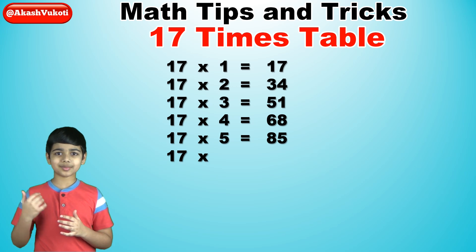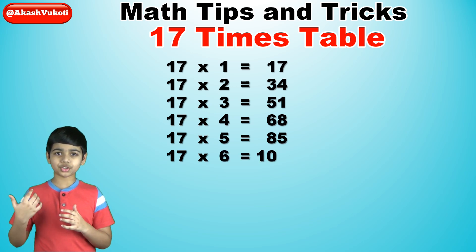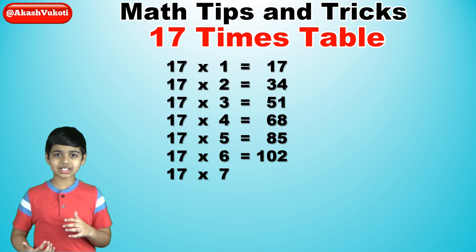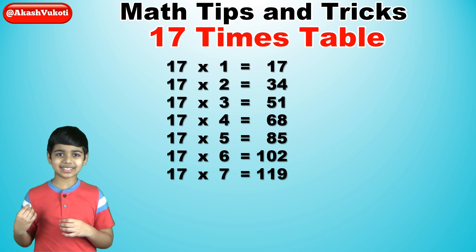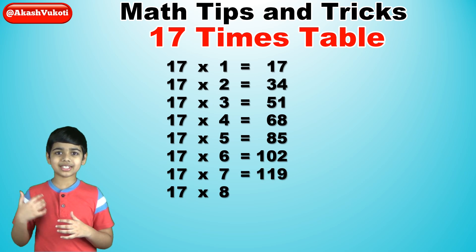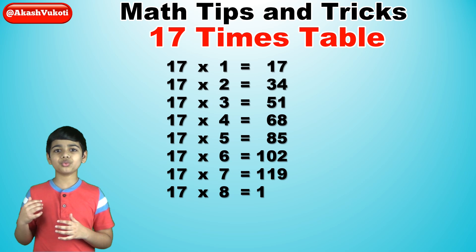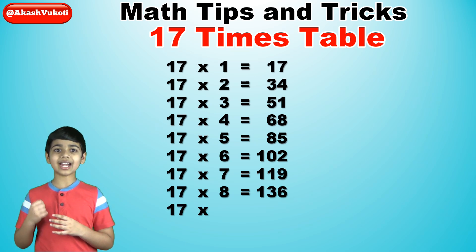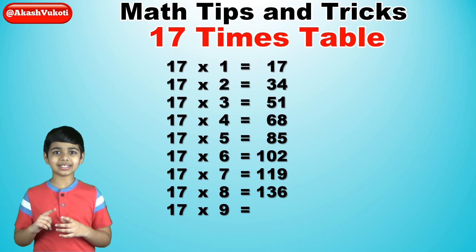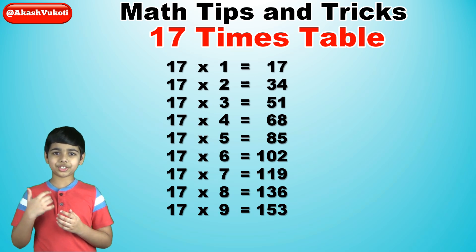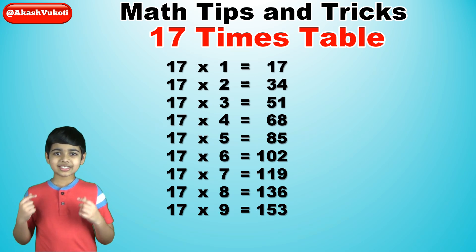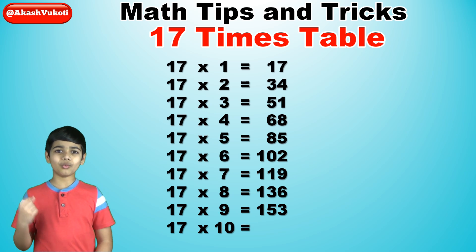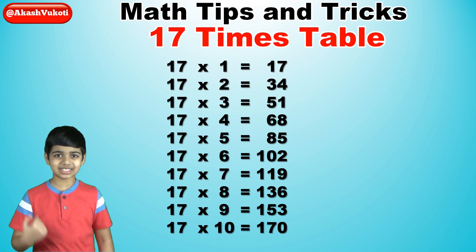17 times 6 is 102. 17 times 7 is 119. 17 times 8 is 136. 17 times 9 is 153. And finally, 17 times 10 is 170.